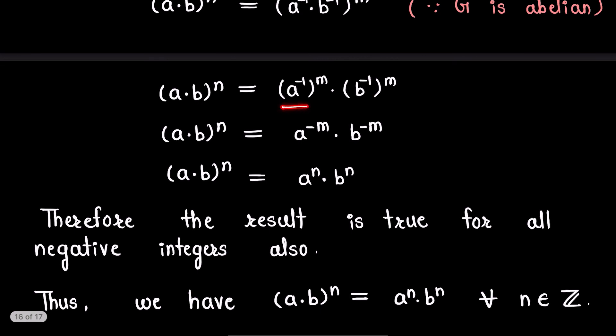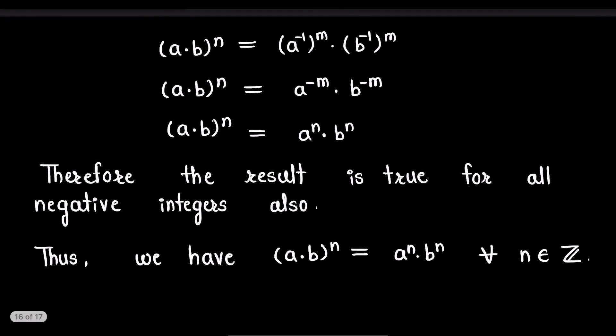Now (a^(−1))^m = a^(−m) and (b^(−1))^m = b^(−m). Replacing −m with n, we finally get (a·b)^n = a^n · b^n. Therefore the result is true for all negative integers as well. Thus we have (a·b)^n = a^n · b^n for all integers n. This proves our result. Thank you.